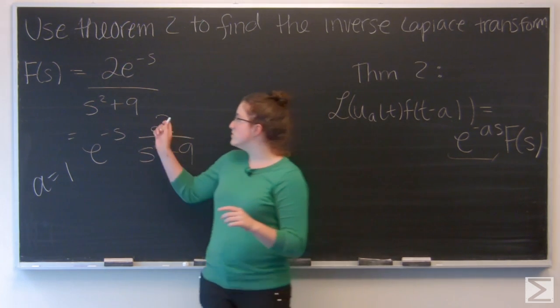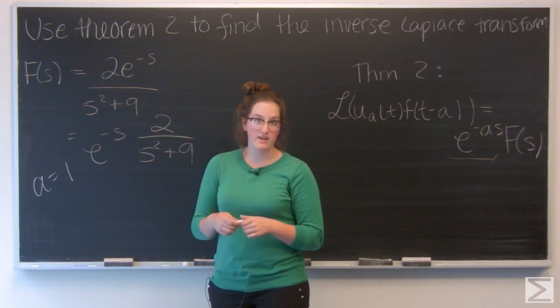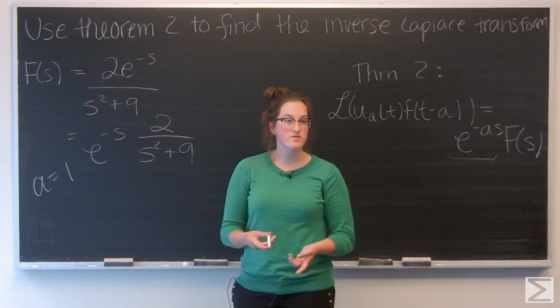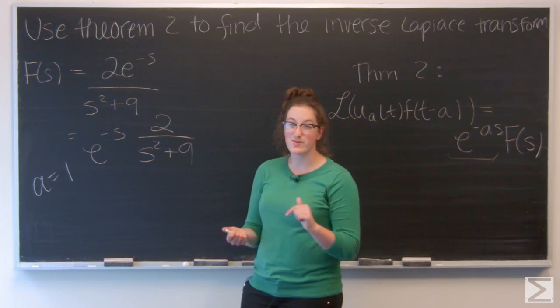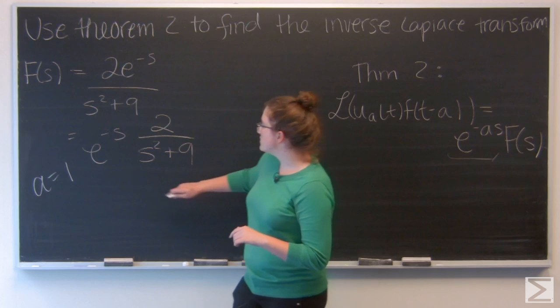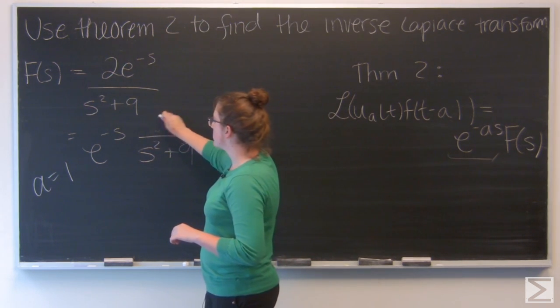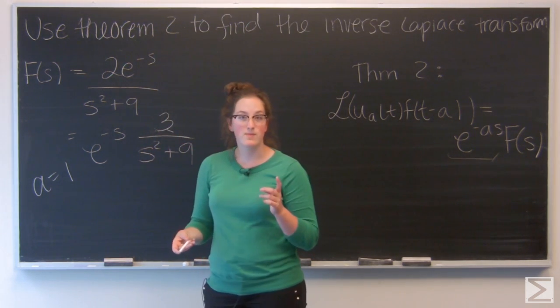And that leaves f of s to be 2 over s squared plus 9, which is really close to the Laplace transform of sine of 3t. I just need a 3 in the numerator. And to do that, I'm going to put a 3 up there and multiply it by 2 thirds.